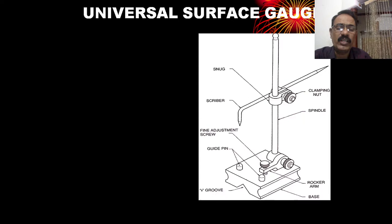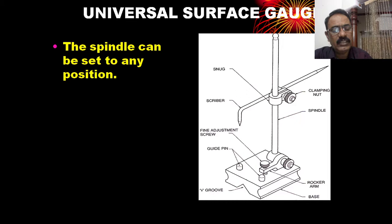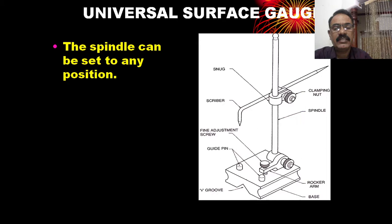This is the universal surface gauge. The universal surface gauge is also called universal scribing block, and it is a marking device used for layout work — that means marking out.